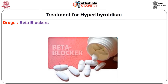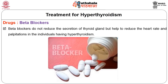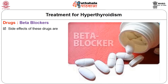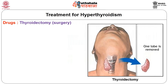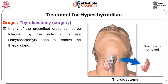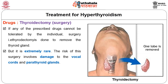Beta blockers, used for treatment of hypertension, do not reduce the secretion of the thyroid gland but help to reduce heart rate and palpitations in individuals with hypothyroidism. Side effects of these drugs include headache, fatigue, stomach upset, diarrhea, constipation, and dizziness. Thyroidectomy, that is removing the thyroid glands through surgery, is done when prescribed drugs cannot be tolerated by an individual, though it is extremely rare. The risks of surgery involve damage to the vocal cords and parathyroid glands.